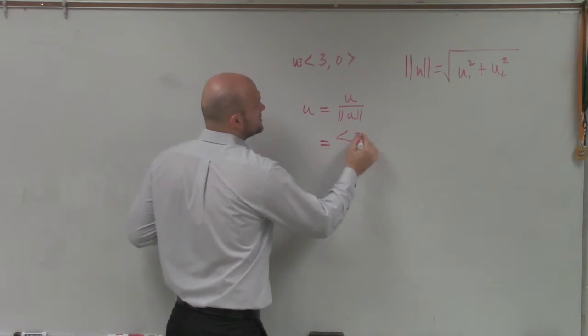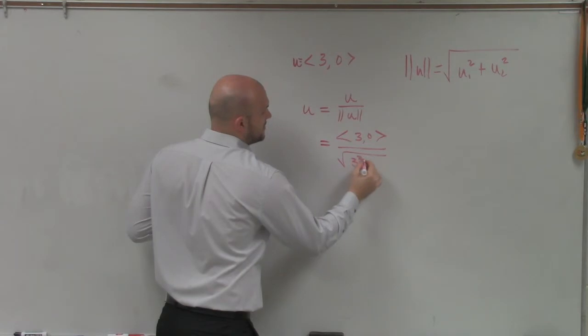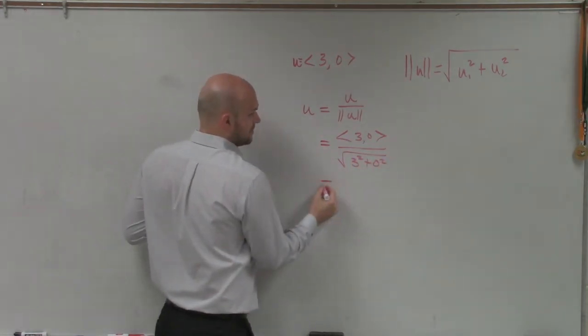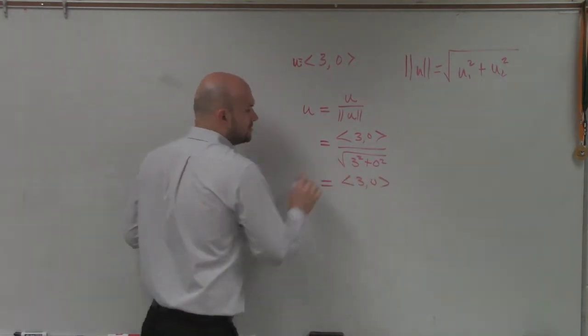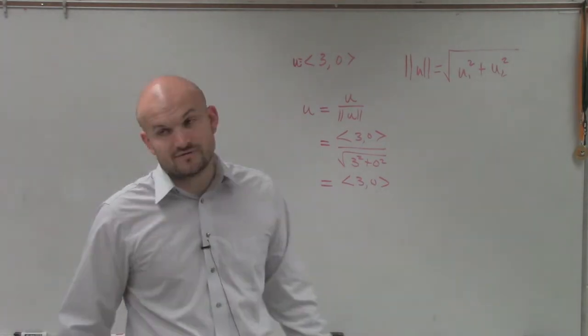So u is 3 comma 0. To find the magnitude, it's going to be 3 squared plus 0 squared. Well, the square root of 3 squared plus 0 squared is just going to be 9. The square root of 9 is 3.